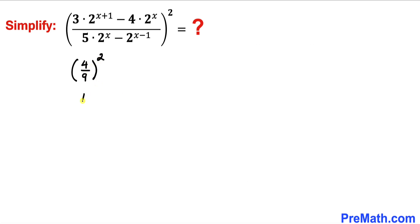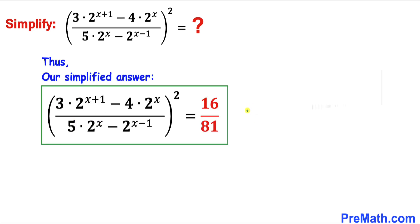Now let's take care of this: 4 squared is going to be 16, divided by 9 squared which is going to be 81. And that's our simplified answer. So our simplified answer turns out to be 16 divided by 81. Thanks for watching and please don't forget to subscribe to my channel for more exciting videos. Bye!